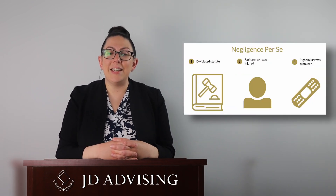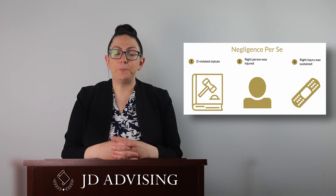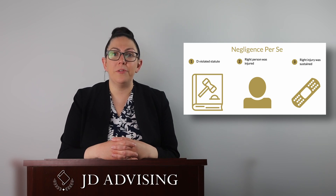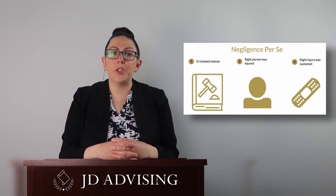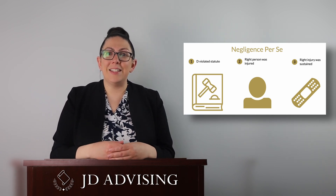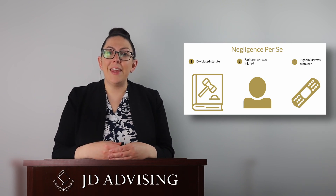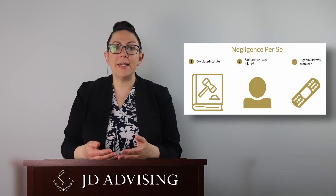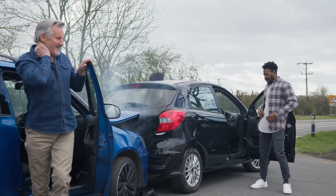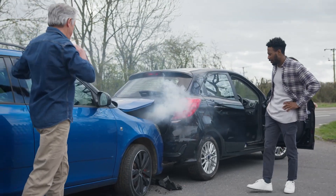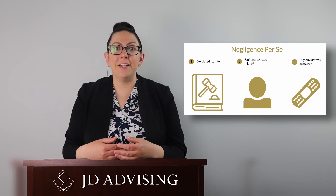Another negligence subissue that is frequently tested is negligence per se. You should generally discuss this if the fact pattern includes some sort of statute that the defendant has violated. The negligence per se doctrine allows the plaintiff to conclusively prove the duty and breach elements of negligence, but the plaintiff will still have to show causation and harm. Negligence per se has three requirements: number one, the defendant violated a statute without excuse; two, the plaintiff was within the class of people the statute aimed to protect; and three, the plaintiff received the injury that the statute aimed to prevent. For example, if the defendant is driving over the speed limit and gets into an accident, he violated a statute by speeding. The other driver is within the class of people the statute is designed to protect, and the injury — the car accident — is exactly the type of injury the speed limit is designed to prevent. So the plaintiff could sue under a theory of negligence per se.